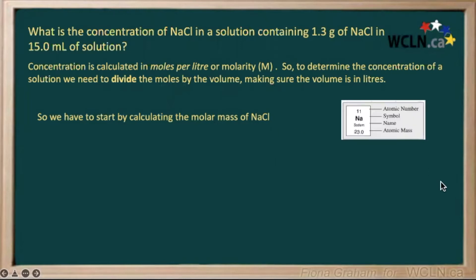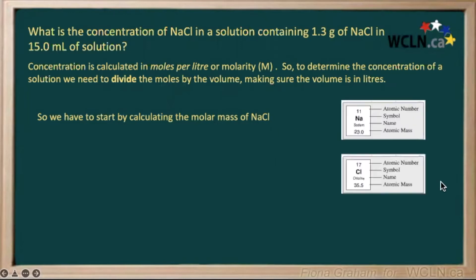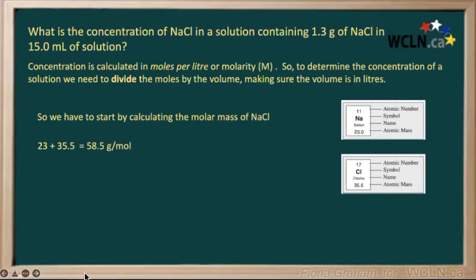Let's go to the periodic table here and look at our elements and their atomic masses, and calculate the molar mass. We have 23 grams for our sodium, 35.5 grams for our chlorine, giving us a total of 58.5 grams for one mole of sodium chloride.